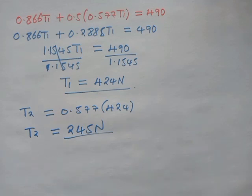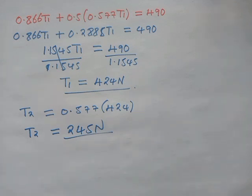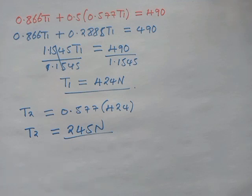That is how we calculate T1, T2, and T3 using the component method with the principle of vectors. Remember the conditions: the summation of forces in x must be balanced — the force in the negative x-direction equals the force in the positive x-direction, giving zero.